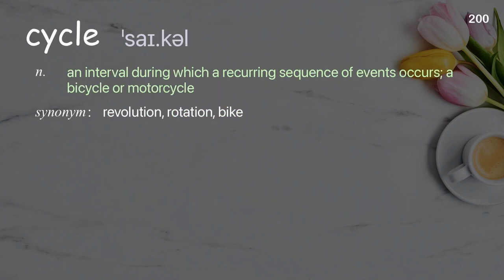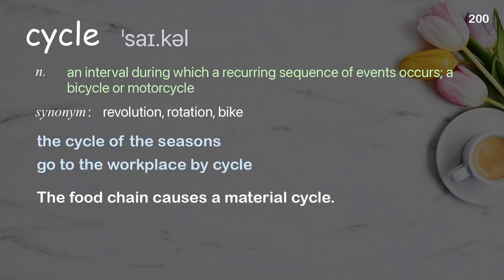Cycle: an interval during which a recurring sequence of events occurs; a bicycle or motorcycle. Examples: the cycle of the seasons, go to the workplace by cycle. The food chain causes a material cycle.